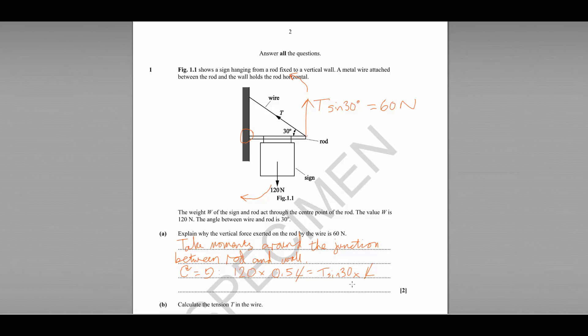So it tells us that T sine 30 equals 120 times 0.5 which equals 60 newtons. So the force acting vertically from that rod must be 60 newtons.